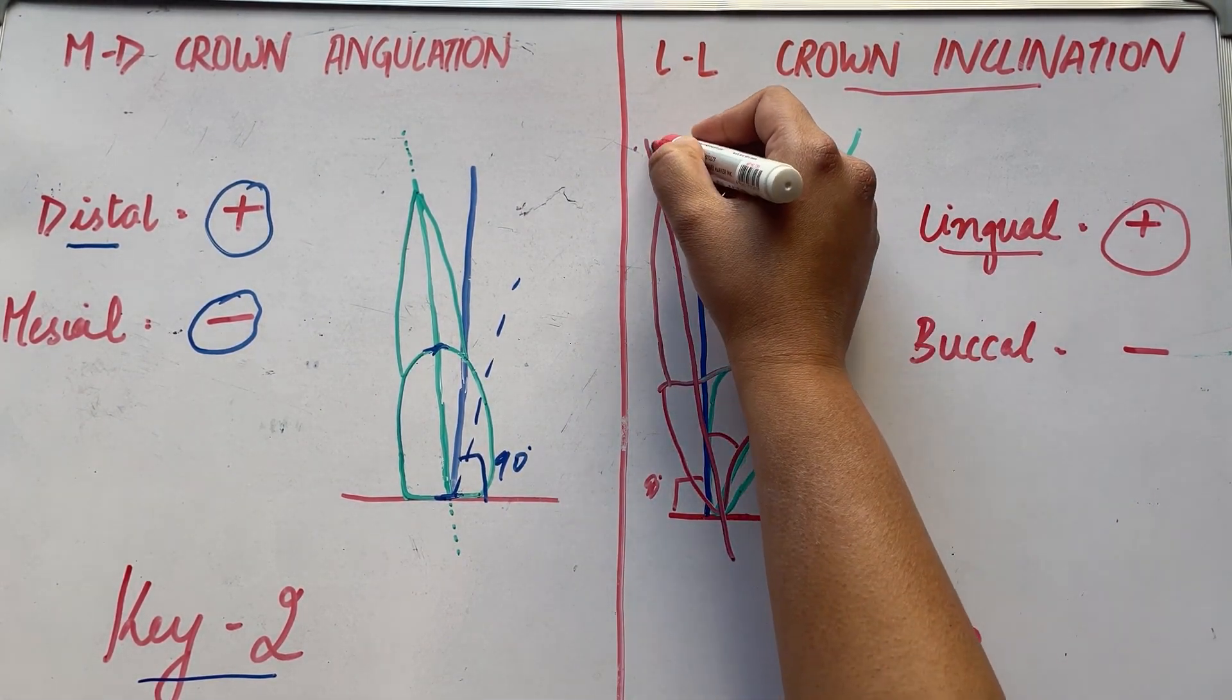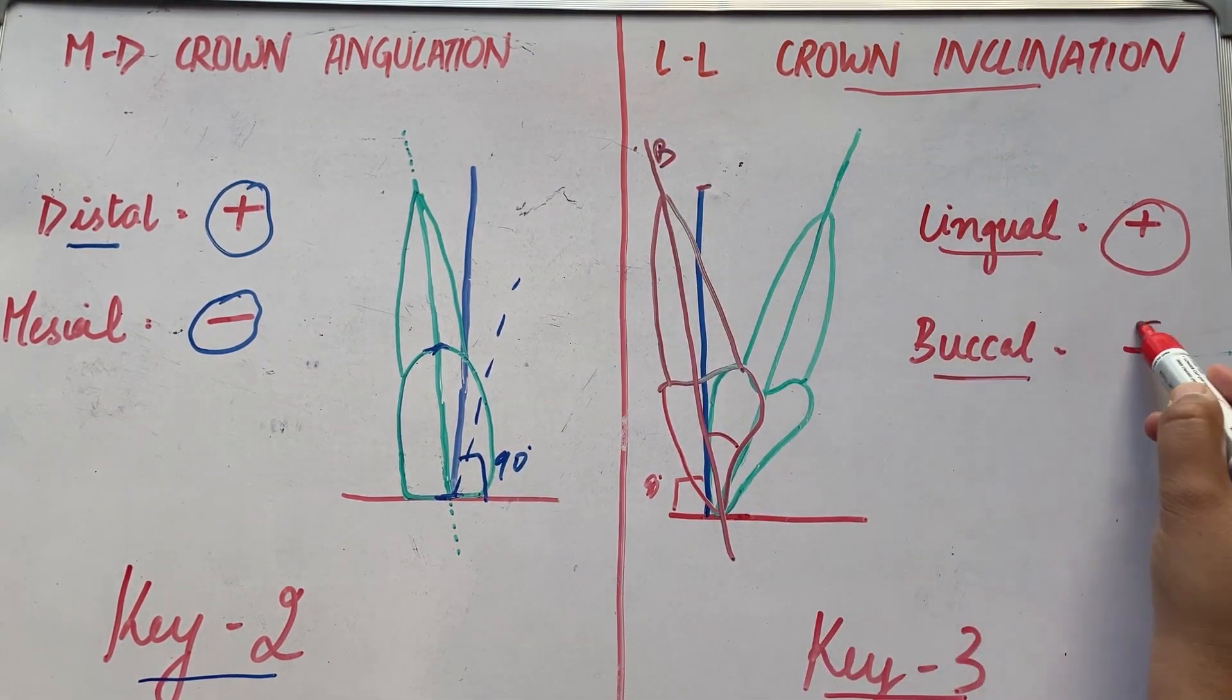When the inclination is buccal to the 90 degree line, the inclination is negative.